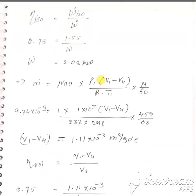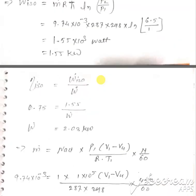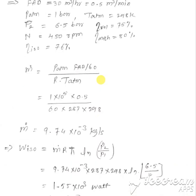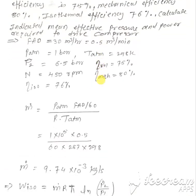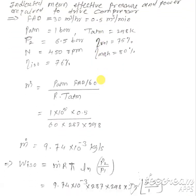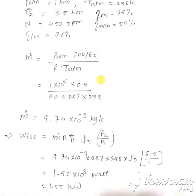To calculate W-dot, let us first calculate M-dot because FAD is given. M-dot = P_atm × FAD / (R × T_atm). M-dot equals 9.74 × 10⁻³ kg per second.